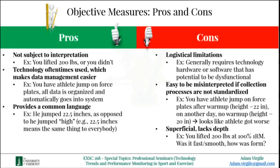The last con of objective measures is the lack of depth they convey. For example, if you lifted 200 pounds on the bench press — which was 100% of your one-rep max when you started the program — what was the quality of that rep? Was it smooth and fast, or was it slow and performed with gross form? Those represent something completely different, and objective measures don't really capture that type of information.